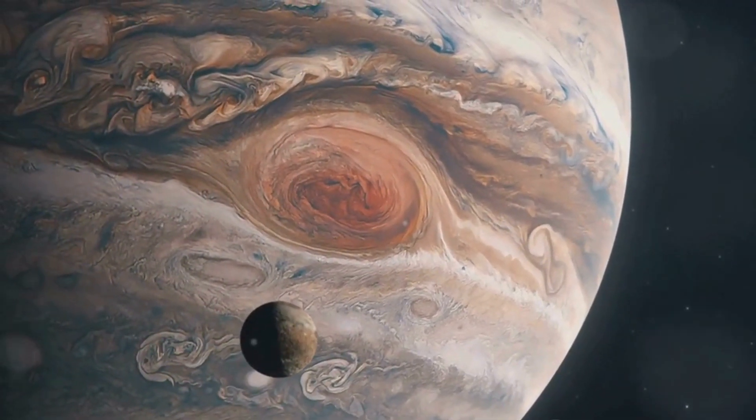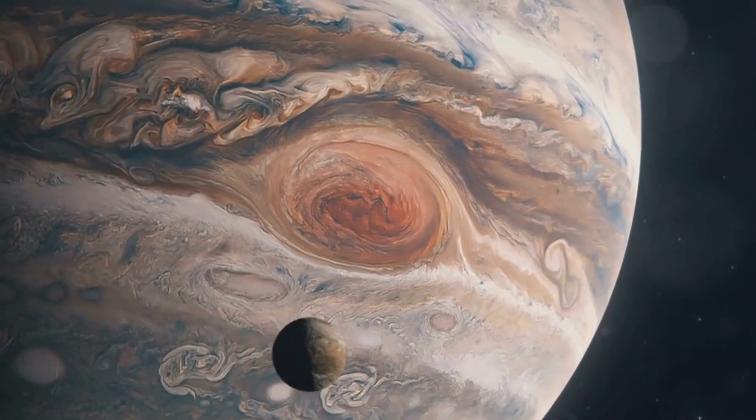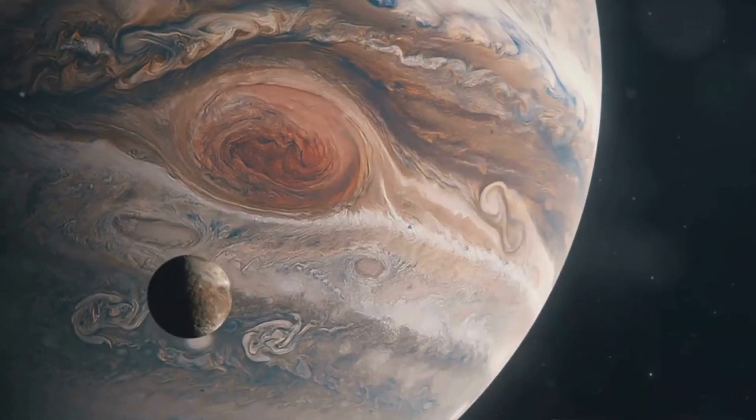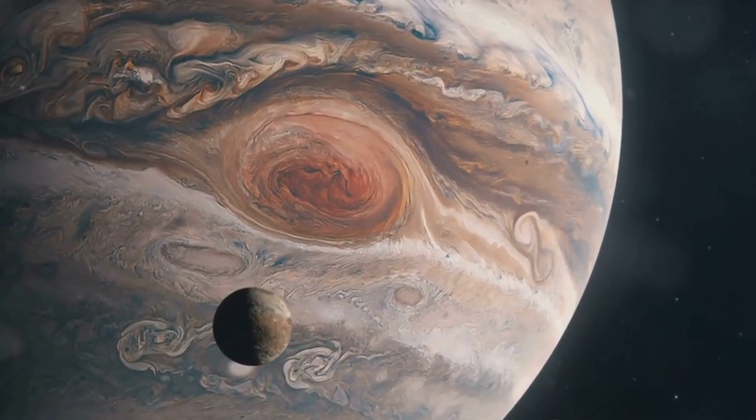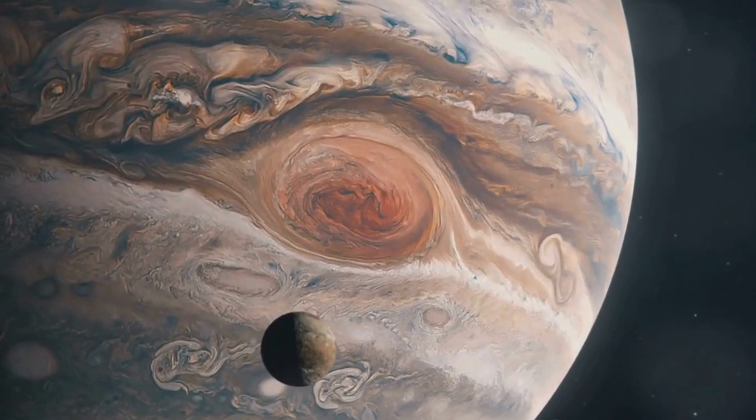This is no ordinary shadow puppet show, it's a dramatic display of cosmic choreography. Unlike Earth's single moon, Jupiter has a retinue of 67 moons. But it's the planet's four largest moons, known collectively as the Galilean moons, that steal the show.